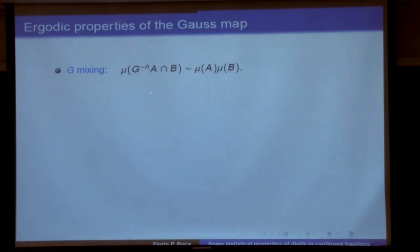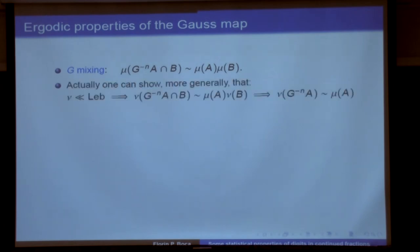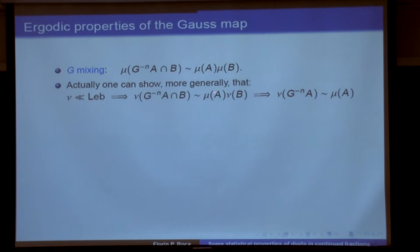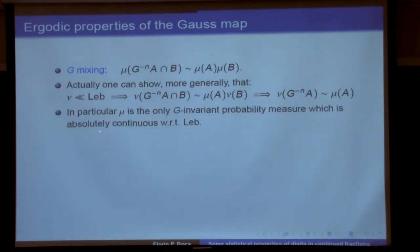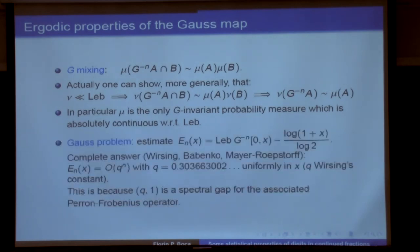What about mixing? G is mixing in the sense that it satisfies this asymptotic relation. More generally, if ν is a measure absolutely continuous with respect to Lebesgue, then something similar holds. In particular, taking B to be the whole interval (0,1), we conclude that ν(g^{-n}(A)) converges to μ(A). This shows that μ is the only g-invariant probability measure absolutely continuous with respect to Lebesgue — this is a bit stronger than mixing.